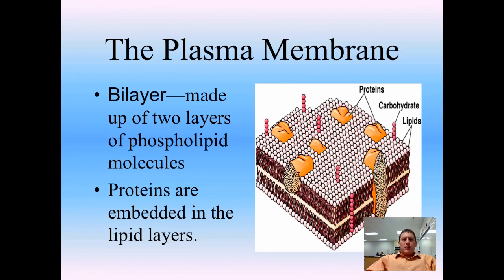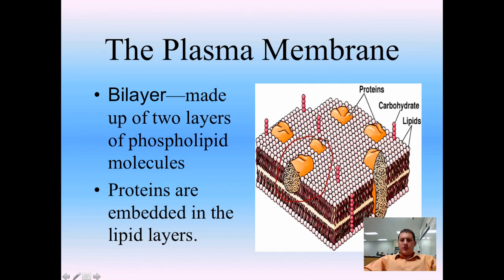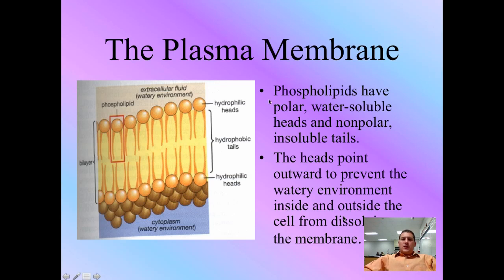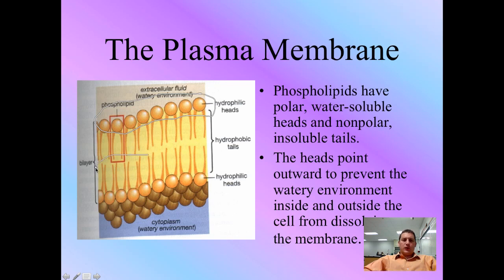The plasma membrane, or cell membrane, is made up of two layers of phospholipid molecules — phospholipids with phosphorus embedded in there. Within that, you have proteins embedded within the cell membrane, some carbohydrates, and your lipid heads and tails. Phospholipids have polar water-soluble heads and nonpolar insoluble tails. The heads are going to be hydrophilic, meaning they love water. Everything in the middle is going to be hydrophobic, staying as far away from water as possible.